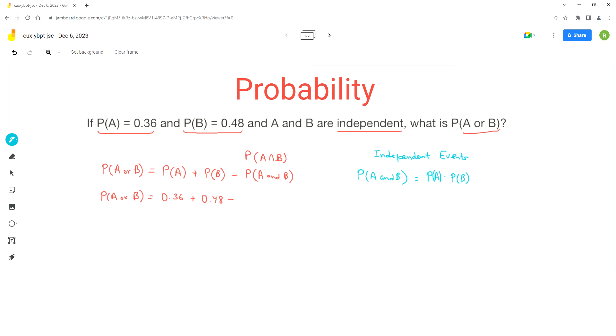So now we can do this calculation. So P(A and B) is 0.36 times 0.48, which equals 0.1728. So this is the probability for P(A and B).